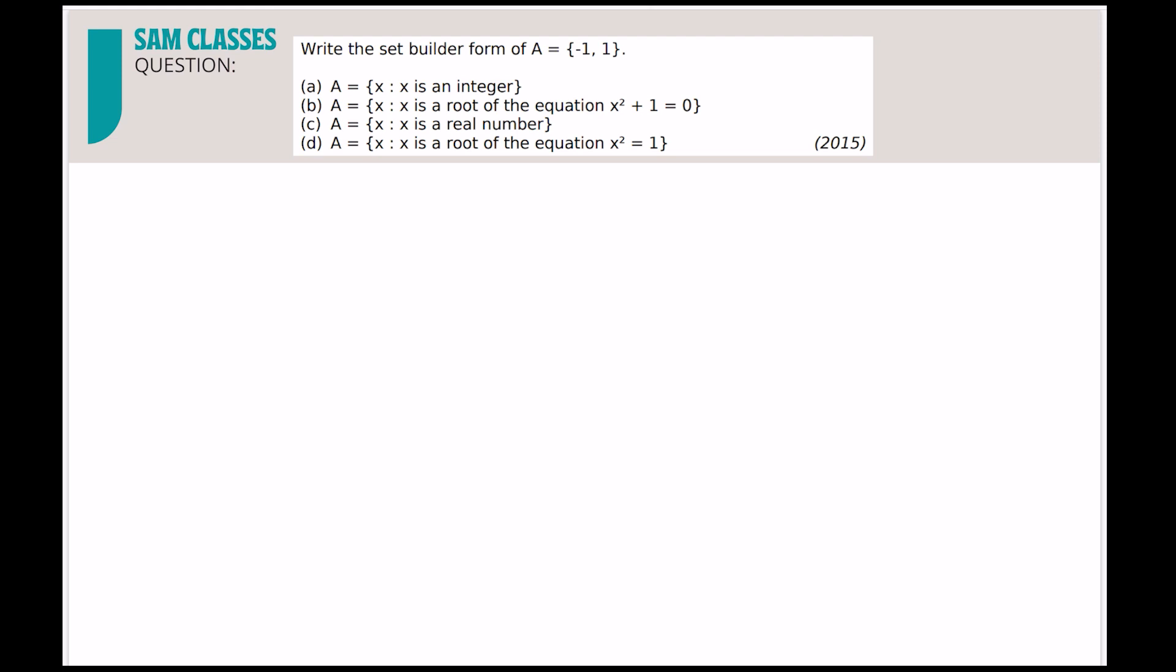Let's see the first question. Write the set builder form of A equals {-1, 1}. So it contains just two elements, -1 and 1. If I say it is an integer, not possible - it will contain all the integers. If I say it is a real number, again not possible. If I say it is the root of the equation x² + 1 = 0, again not possible because x² = -1, that is not possible. Fourth one correct, that's it.